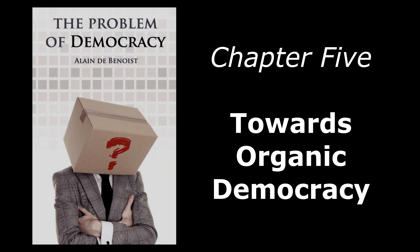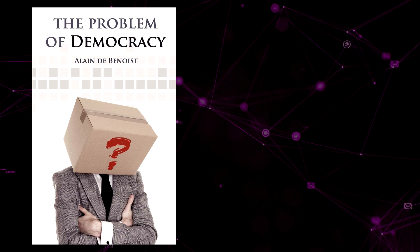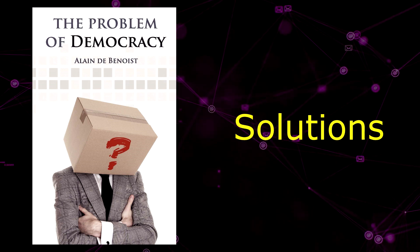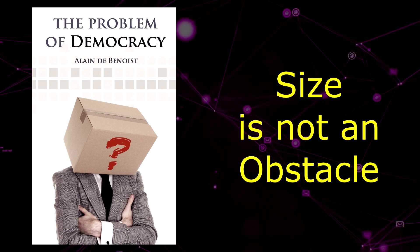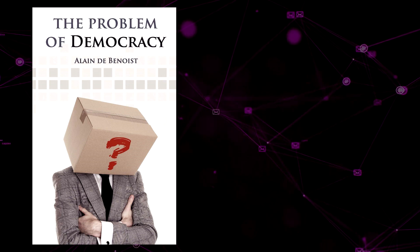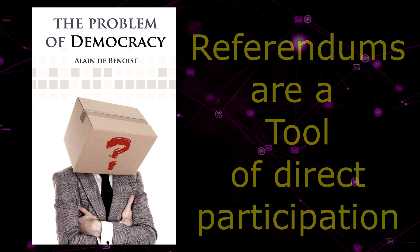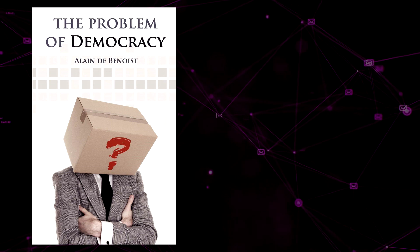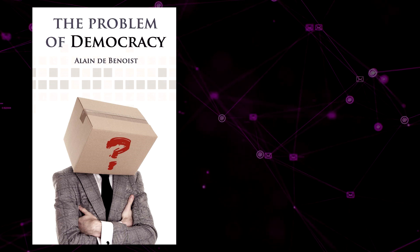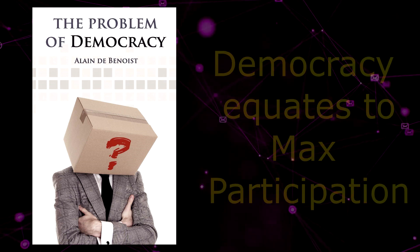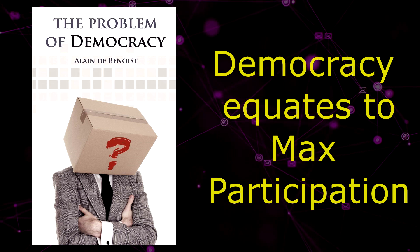Chapter 5: Towards Organic Democracy. While the previous chapters described the pros and cons of democracy, this final chapter is about solutions. Benoit argues size is less of an obstacle to direct democracy today due to decentralisation of power and growth of local governance. Referendums are another tool. He advocates promoting forms of direct participation like municipal associations and cooperatives to foster grassroots democracy, and calls for popular sovereignty based on the historical roots of democracy, not liberal individualism. He defines democracy as maximum participation and wants to expand beyond just voting to new forms of consent and self-governance.